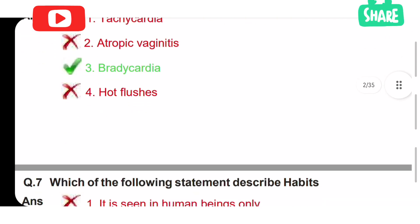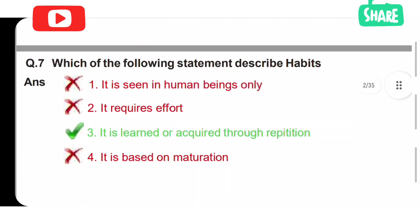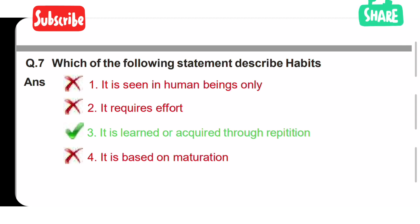Seventh question: which of the following statements describes habits? Option 1: it is seen in human beings only. Option 2: it requires effort. Option 3: it is learned or acquired through repetition. Option 4: it is based on maturation. The correct answer is Option 3 — it is learned or acquired through repetition.